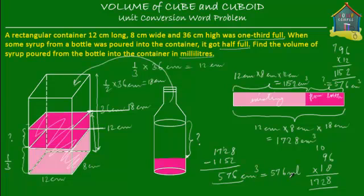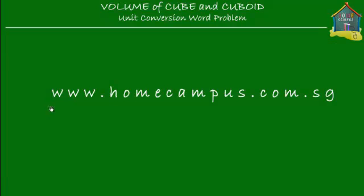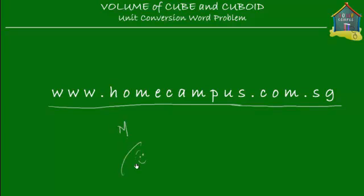We have to find the answer in milliliters, and we know that cm³ and milliliters are interchangeable — 1 cm³ equals 1 milliliter. So this is 576 milliliters. The amount of syrup that was poured from the bottle into the container is equal to 576 mL. And that's your answer and the end of this word problem. I hope you understood it. Go and solve some other word problems at www.homecampus.com.sg. Don't forget to practice because practice makes perfect. This is Anne signing off. Bye.